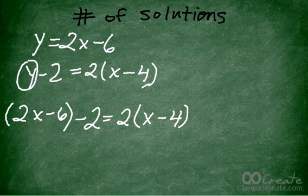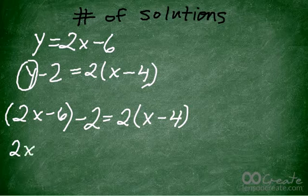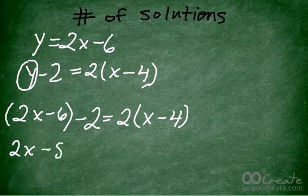First, in this parenthesis on the left side, there is no distribution, so I can just remove the parenthesis and say 2x minus 6 minus 2, and that's just minus 8. Negative 6 minus 2 is negative 8.